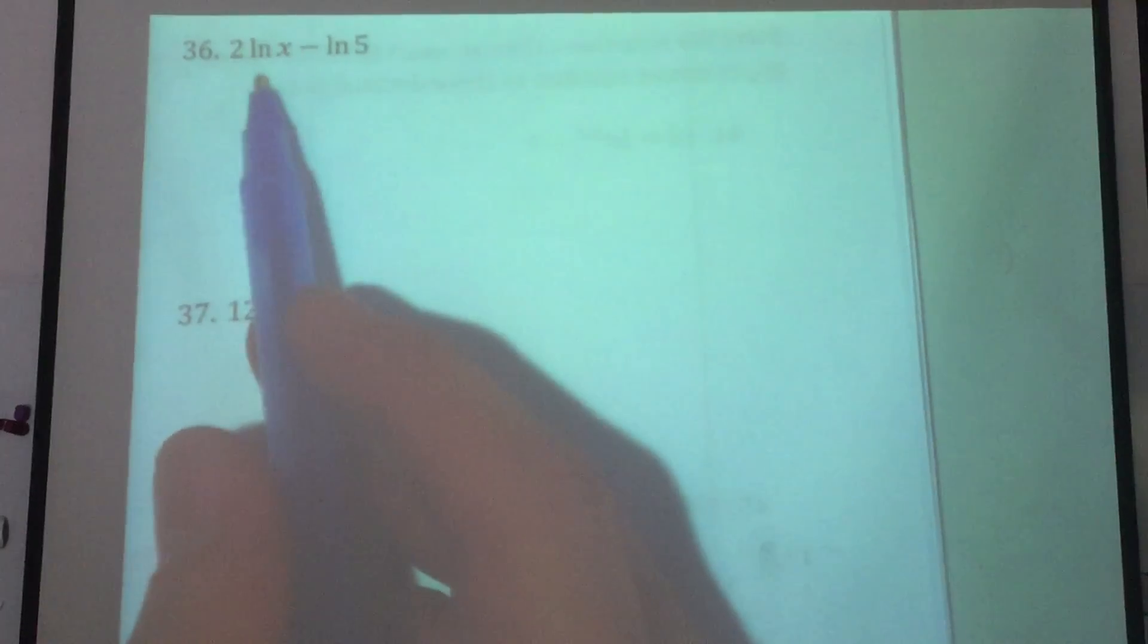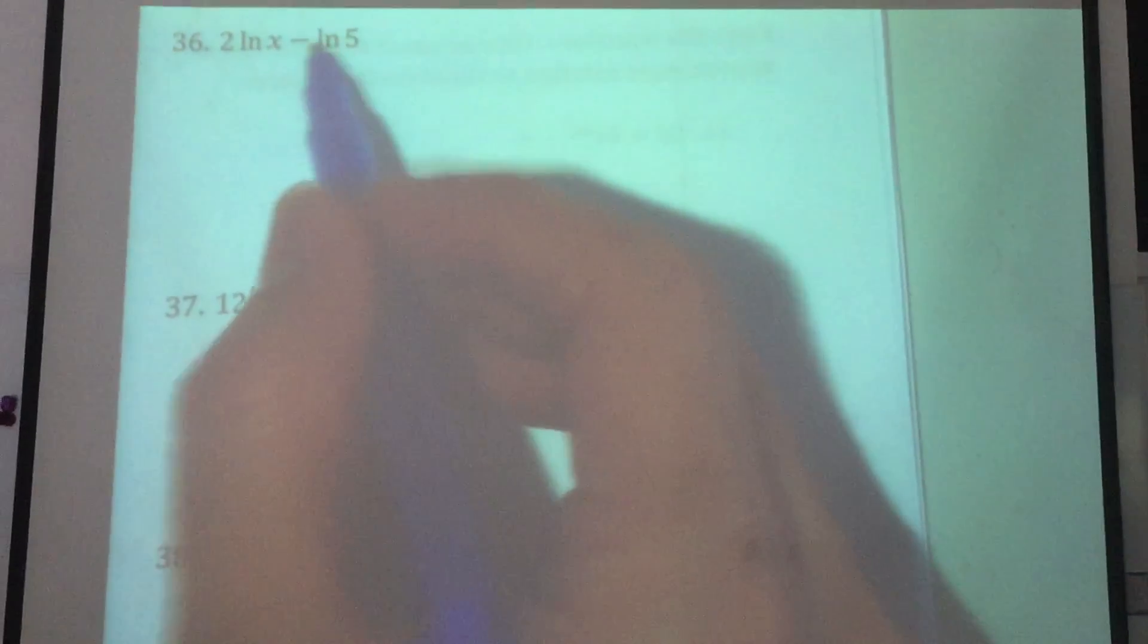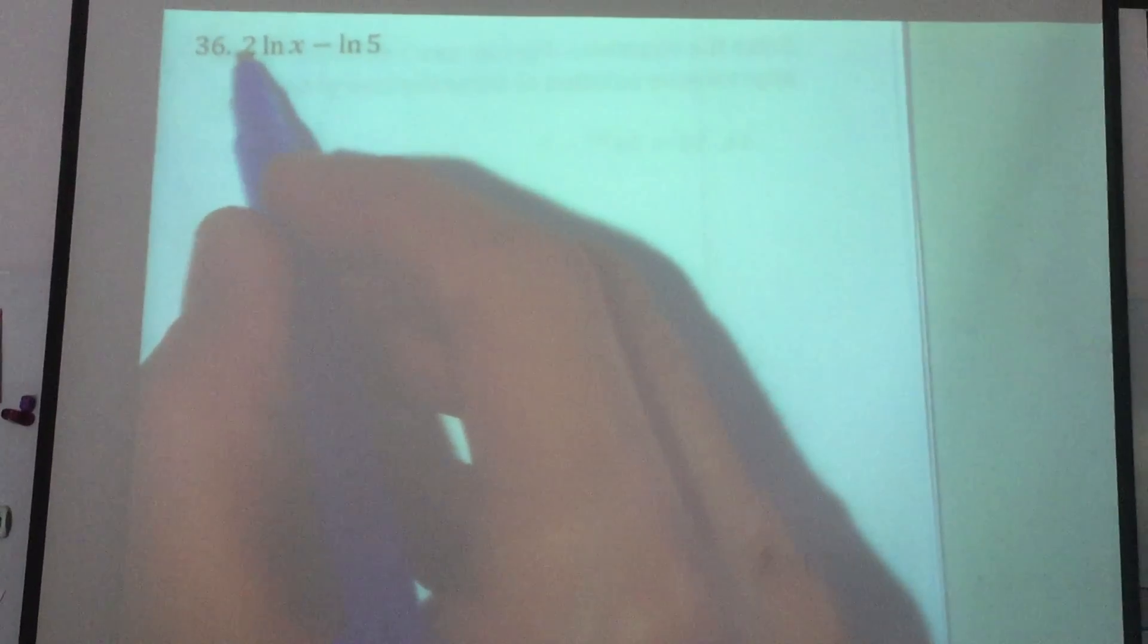Once again, it's very similar to the one we just did, number 35. I can't put these together. I can't use the quotient property, right? There's a minus there, and they're both natural logs, so they have the same base. But I cannot put them together because of the 2.